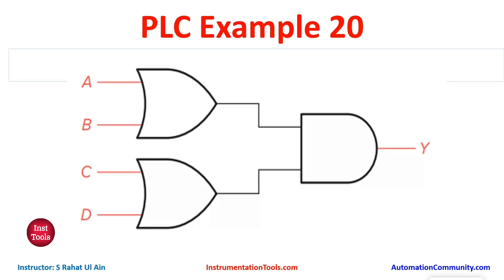Then there is an AND gate with the output of A plus B and C plus D. We will be using normally open contacts for all the inputs. We will connect A and B in parallel, we will also connect C and D in parallel, and then we will connect A and B in series with C and D.